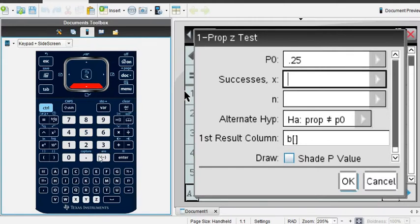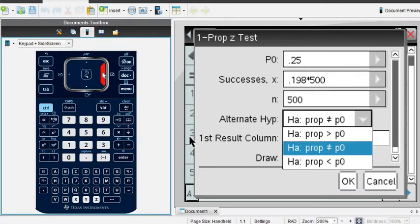Our P naught is always the value that's in the null hypothesis, so that's our 0.25. X, like I said, this is the 0.198 times 500, and if it doesn't automatically put a value in here and you get an error, this calculator doesn't necessarily change it, so you may want to check this before to see if it's a whole number. If it gives you an error, it's because of this right here that it's not a whole number. N is 500, and our alternate hypothesis should match our alternative hypothesis that we had, so our proportion should be less than our P naught.